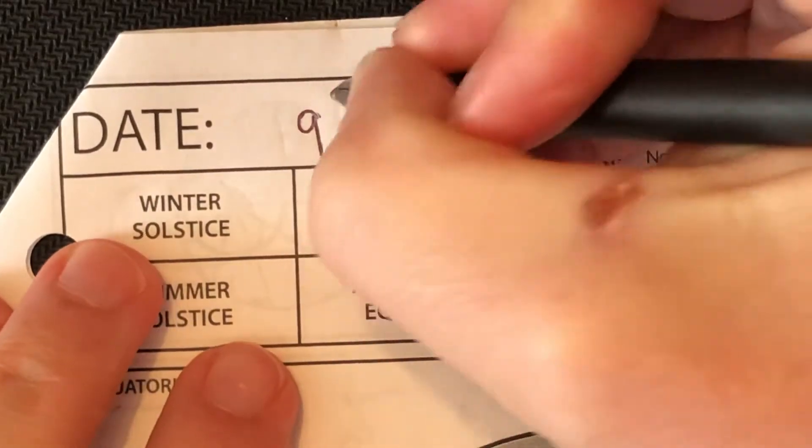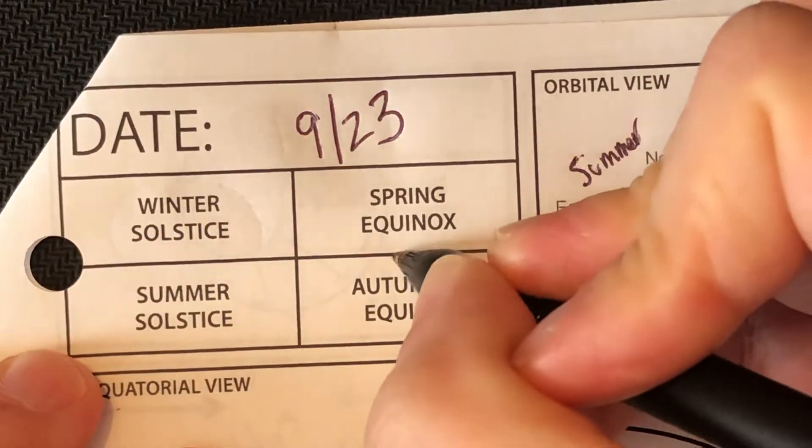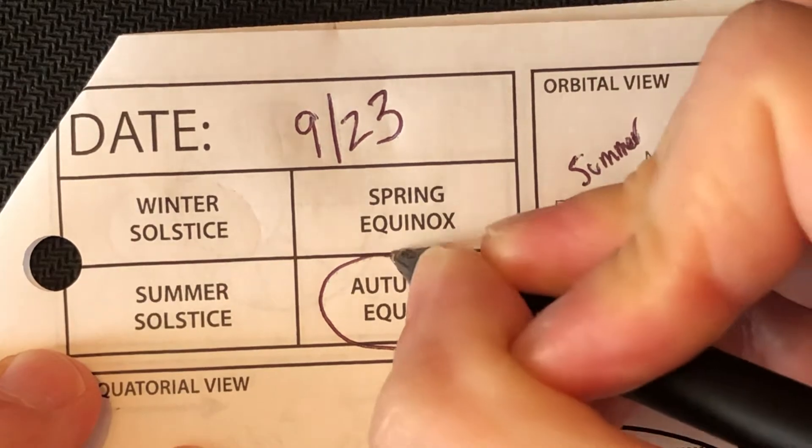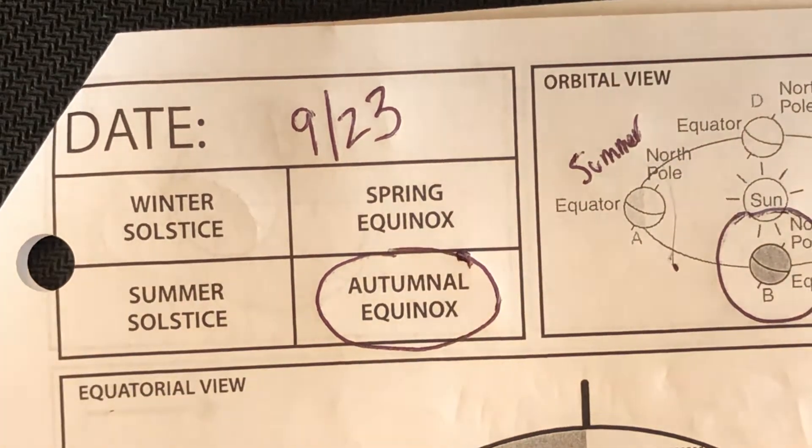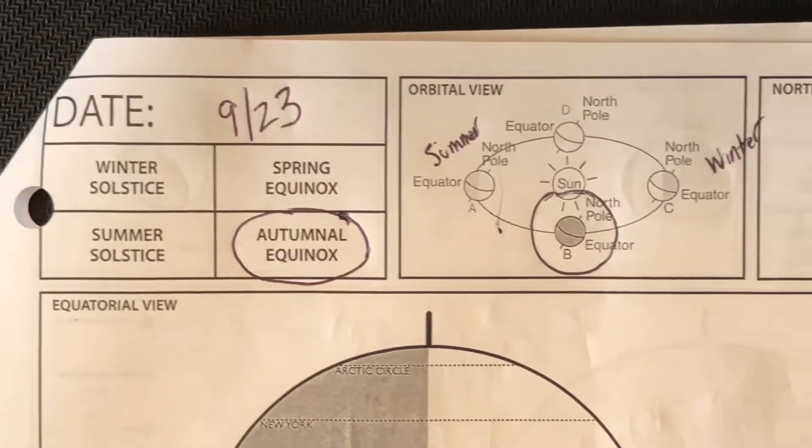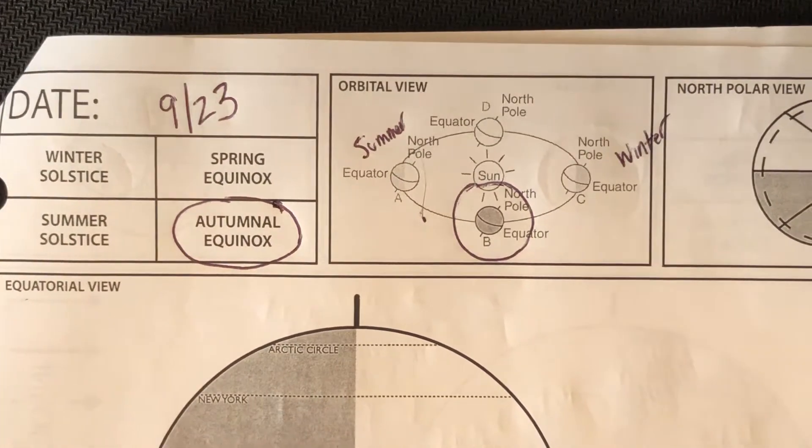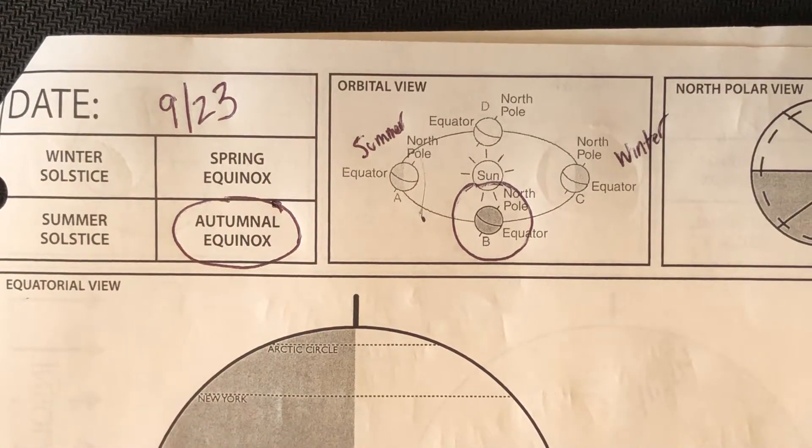Once you figure out summer and winter, now you just go in the order of the seasons. Summer, fall. This one right here is going to be the fall season. The fall season is 9/23. This is what we call the autumnal equinox. 9/23, the autumnal equinox. Equinox translates into equal - equal day and equal night.